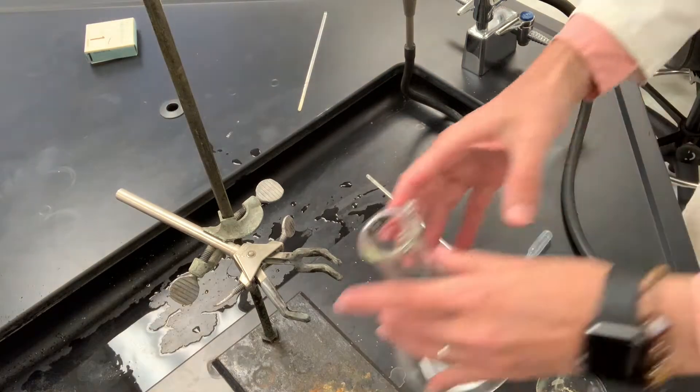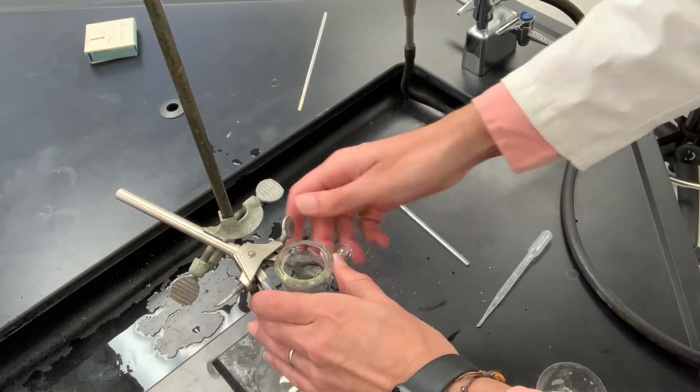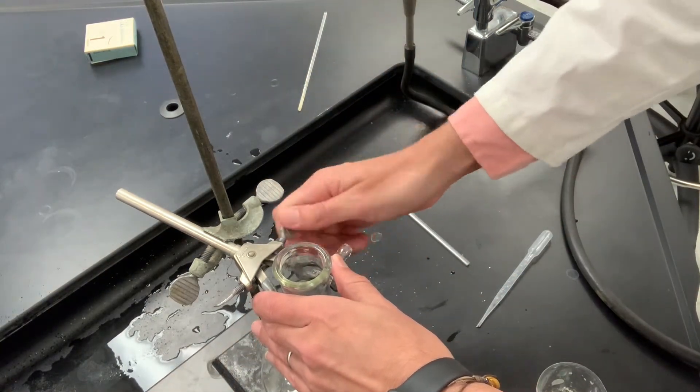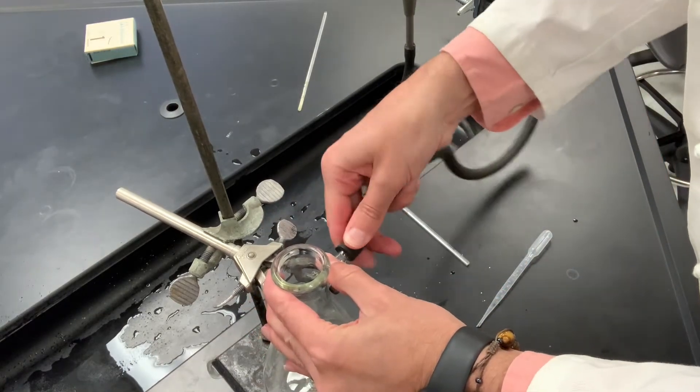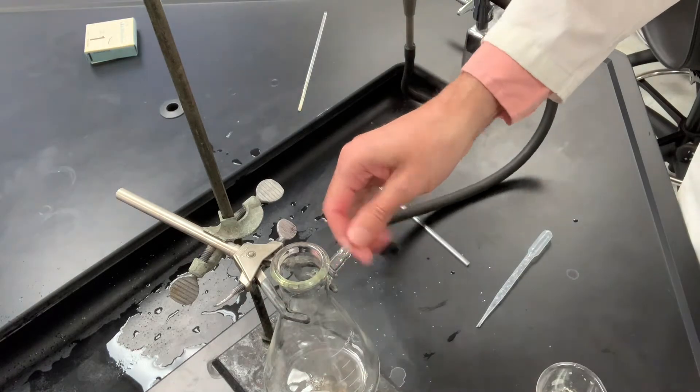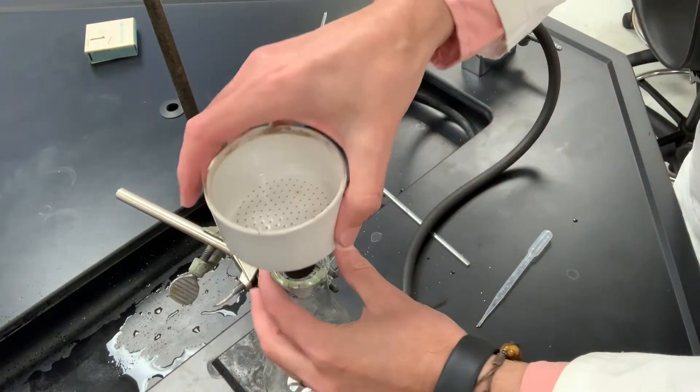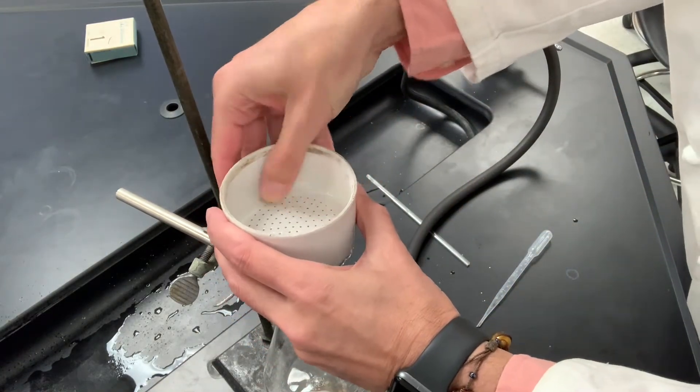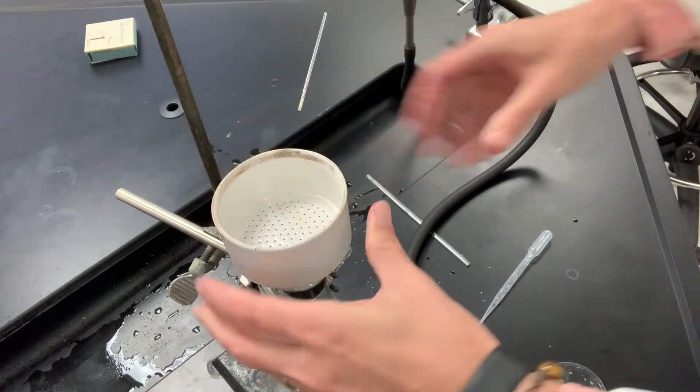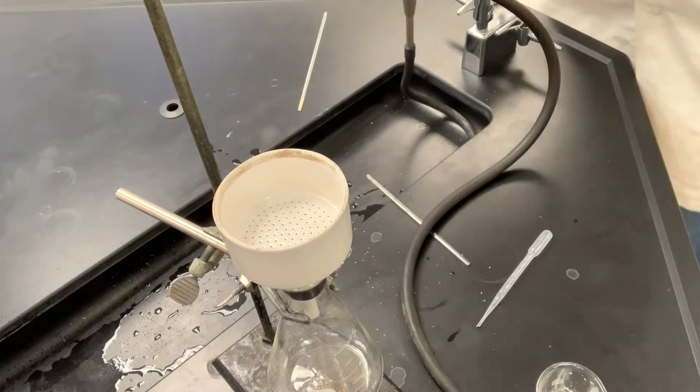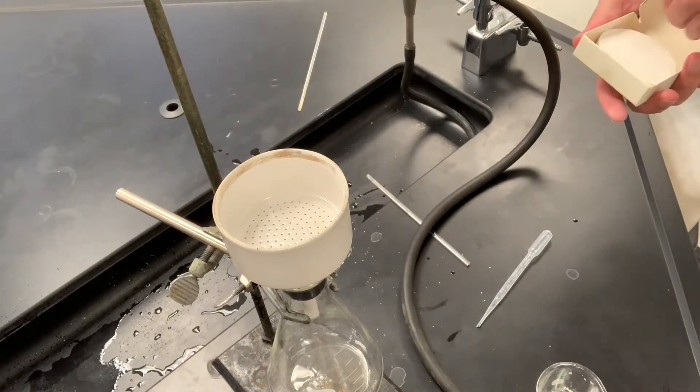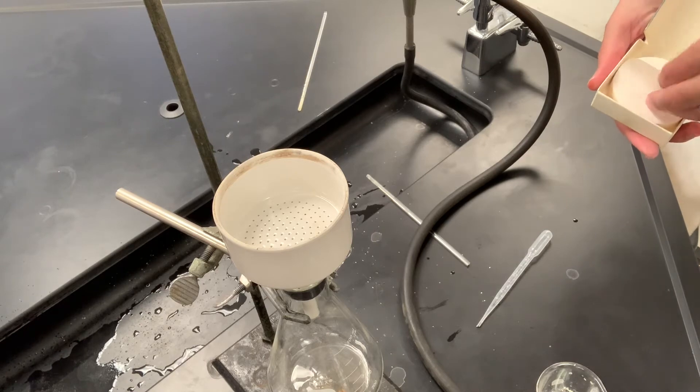Now we'll go ahead and filter the copper nitrate catalyzed oxidation of benzoin, and we'll just do exactly what we did before using a different Buchner funnel. We'll wet some filter paper here.